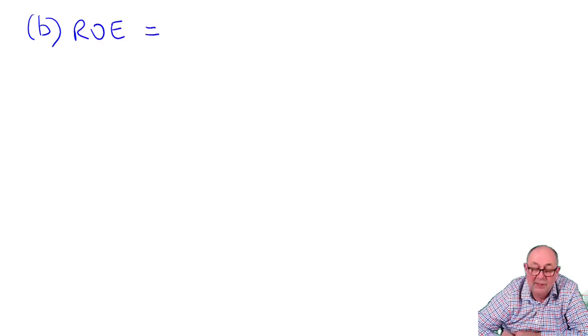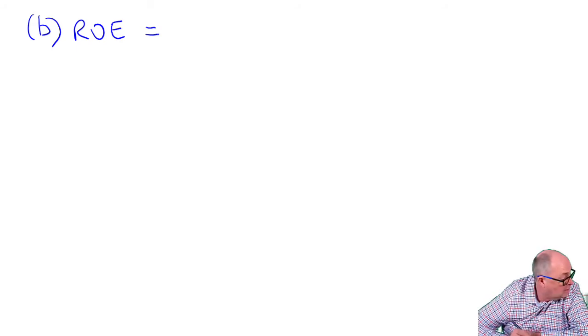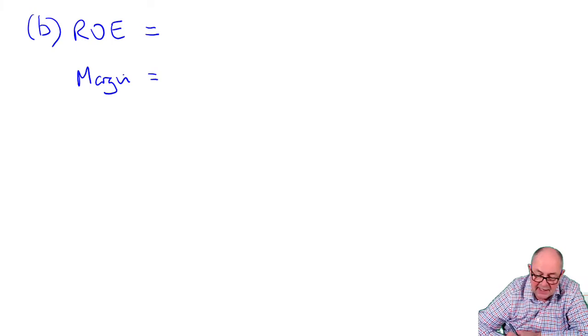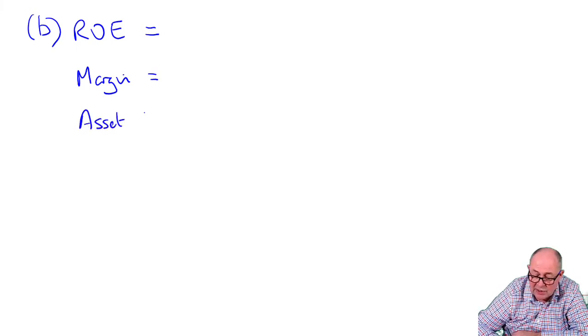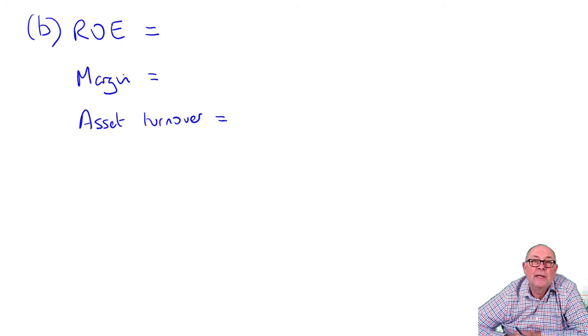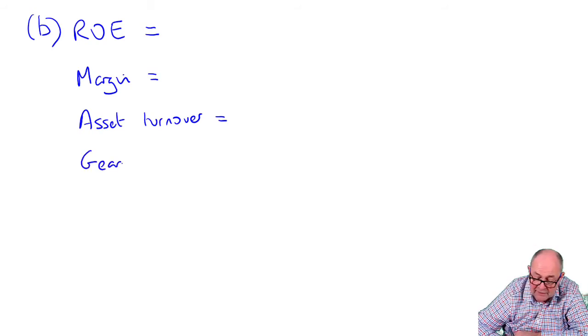We've got return on equity. You're told the return on equity is a multiple of profit margin, then sales over assets - that's asset turnover. And finally, assets over equity. It's a sort of measure of gearing. It tells you how much of the assets are financed by equity as opposed to debt.